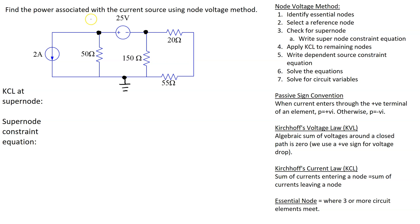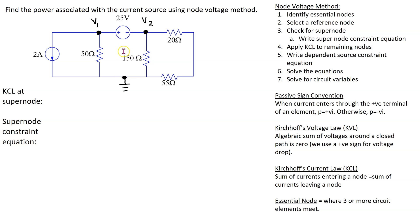We label the other essential nodes as v1 and v2. Before we apply Kirchhoff's current law to these two nodes, we need to check for the possibility of a super node. In this case we can see that the voltage source is directly connected between two essential nodes, so this is a super node case.